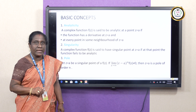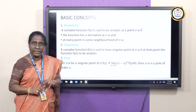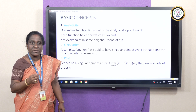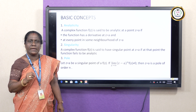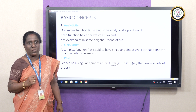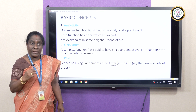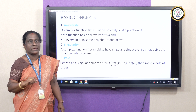A complex function is said to be analytic at a point z = a if it satisfies two conditions. First, it should have a derivative at that point z = a, and also at every point in the neighborhood of z = a. The neighborhood means: if I draw a small circle with center z = a and radius epsilon, then a point z = b outside that circle is said to be in the neighborhood of z = a.